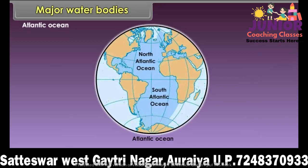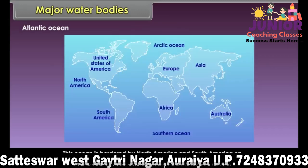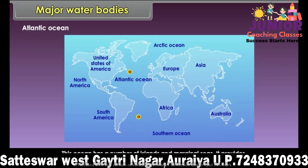Atlantic Ocean. The Atlantic Ocean is almost half the size of the Pacific Ocean. It is S-shaped and covers nearly one-sixth of the earth's surface. This ocean is bordered by North America and South America on the west, and Europe and Africa on the east. It interconnects the Arctic Ocean in the north and the Southern Ocean in the south. This ocean has a number of islands and marginal seas, and provides busy transport routes between North America and Europe.